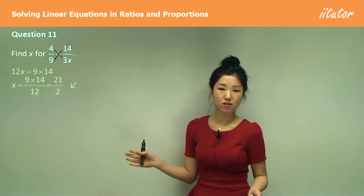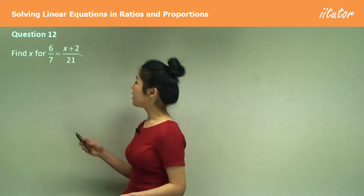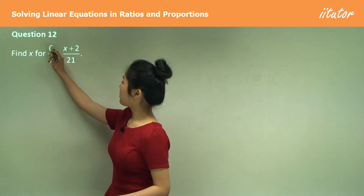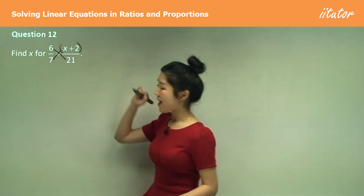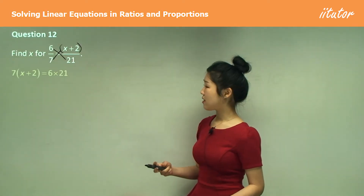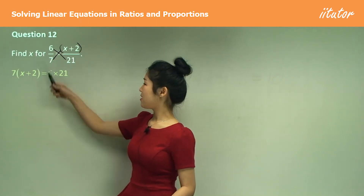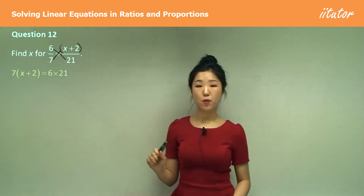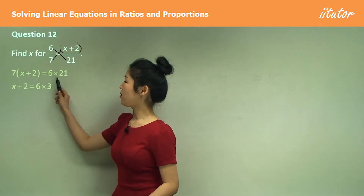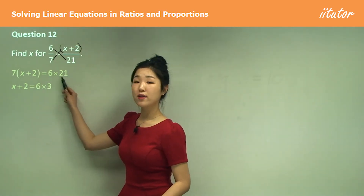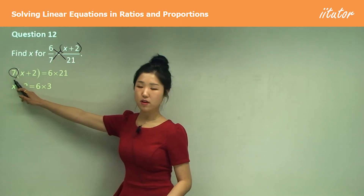Question 12: cross multiply again. Multiply 6 with 21 and 7 with the entire expression (x + 2). So 7 times (x + 2) equals 6 times 21. Then x + 2 equals 6 times 21 divided by 7.